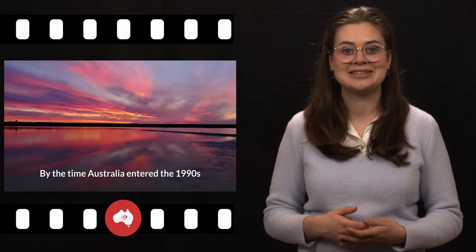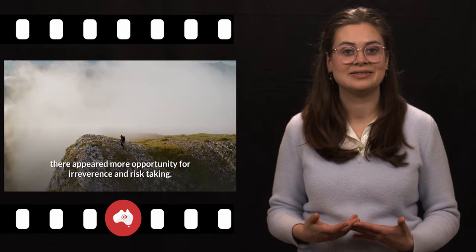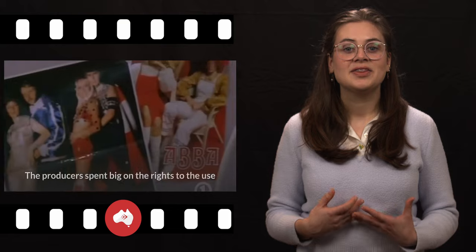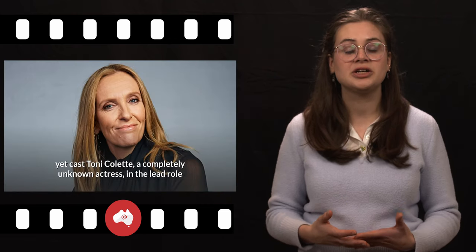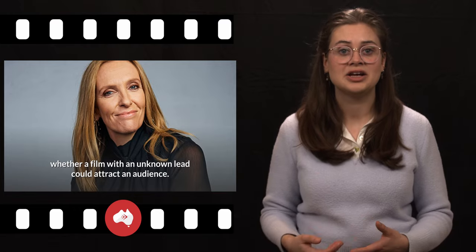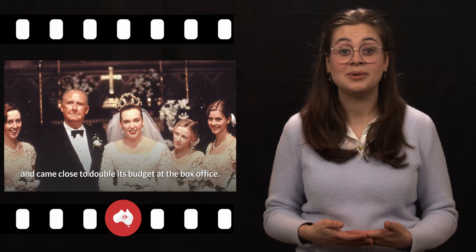By the time Australia entered the 1990s, after having established its cinematic scene as a respected, capable, and financially viable industry, there appeared more opportunity for irreverence and risk-taking. 1994's Muriel's Wedding was one such example of a flick that took a huge gamble with a titular character, the antithesis of most leading ladies in all her unashamed awkward, portly, and socially inept glory. The producers spent big on the rights to the use of Swedish band Abba's music for the soundtrack, a request that Abba initially denied but later relented on, yet cast Toni Collette, a completely unknown actress, in the lead role, furthering the level of uncertainty as to whether a film with an unknown lead could attract an audience. The risks paid off, however, as Muriel's Wedding was a reasonable hit and came close to double its budget at the box office.